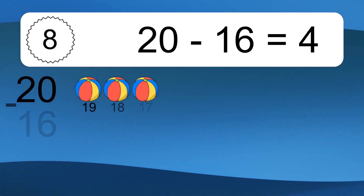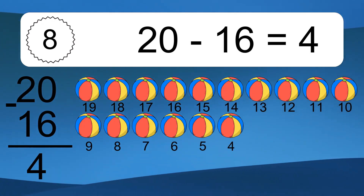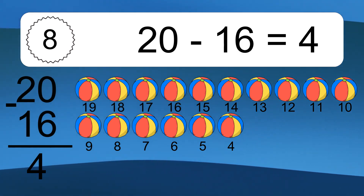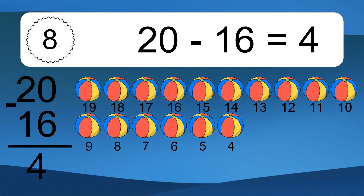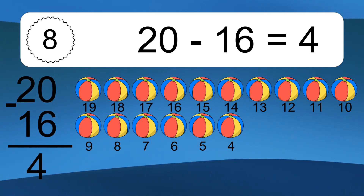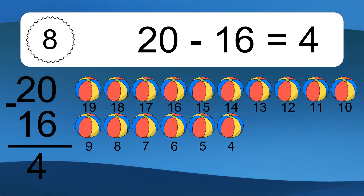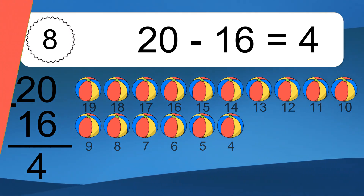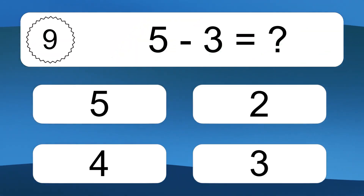20 minus 16 equals 4. Let's count it. 19, 18, 17, 16, 15, 14, 13, 12, 11, 10, 9, 8, 7, 6, 5, 4. 5 minus 3 equals what?